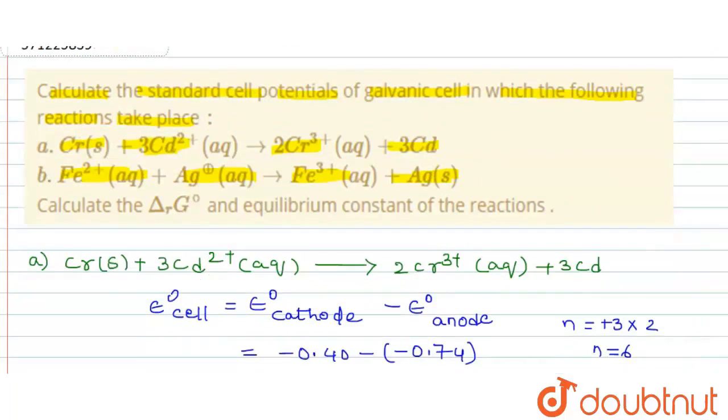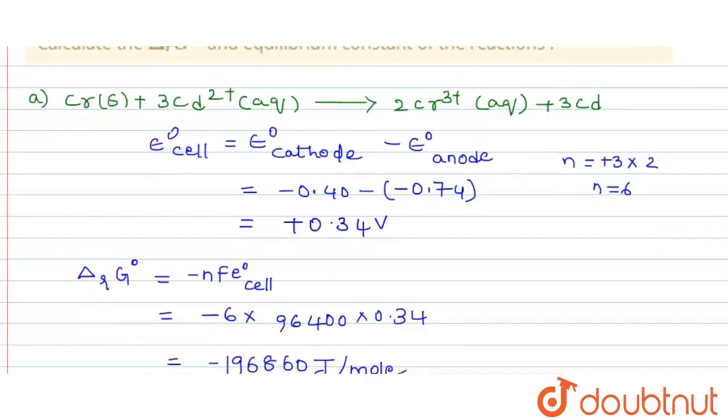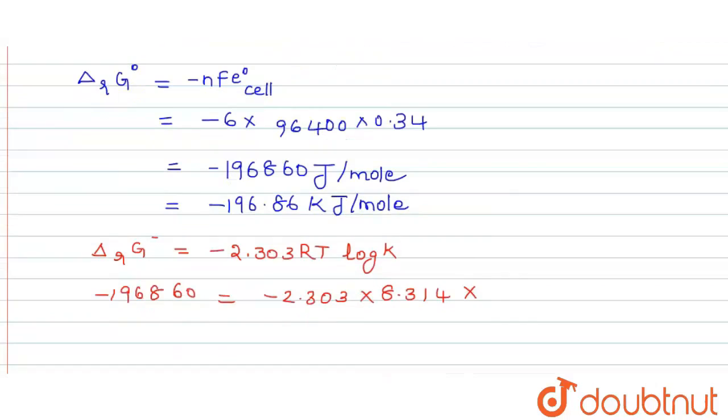Here, we have to find out the standard cell of the potential. Means we have to take T, that is T as standard room temperature 298 Kelvin into log K.